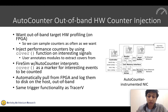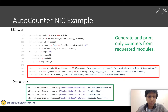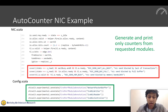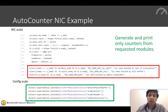AutoCounter also supports the same triggering functionality as Tracer5. With this, we can sample performance counters as often as we want, only trading off simulation performance and fidelity. Here's an example of adding covers to our NIC RTL — we call the cover function, pass it a signal, and give it a name and description to produce the auto-counter. We also provide an API to annotate different modules and indicate that you would like to pull off counter information from particular modules.